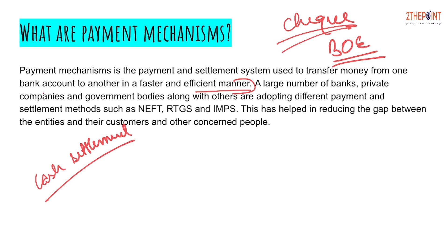Jab cash mein settlement hota hai toh woh record se bahar hota hai — banks mein koi record maintain nahi ho paata, na government ko pata chalta hai ki kya transactions ho rahe hain. Financial inclusion badhane ke liye aur payment system ko efficient banane ke liye government ne time to time alag-alag payment mechanisms nikale: NEFT, RTGS, aur IMPS.